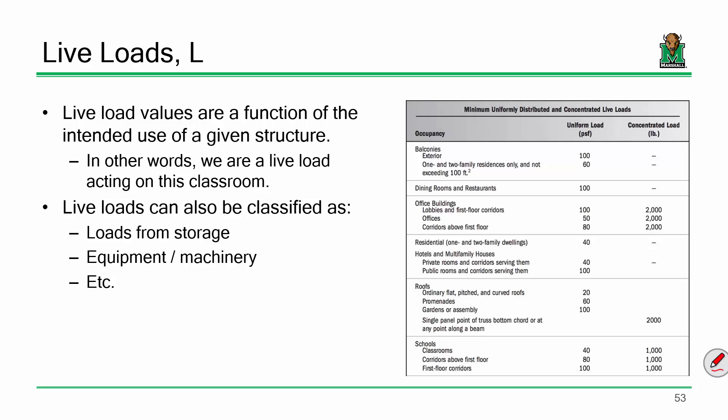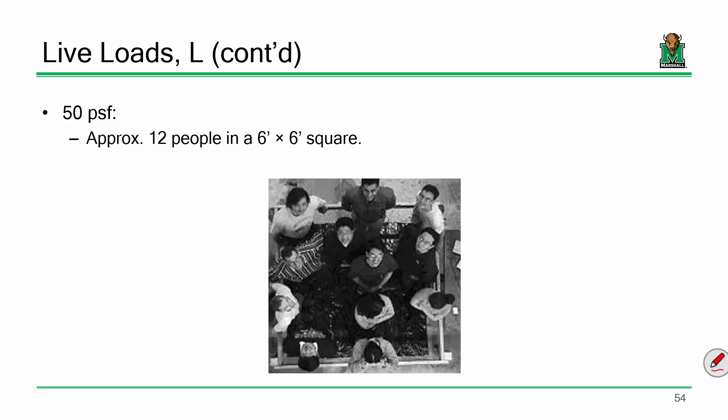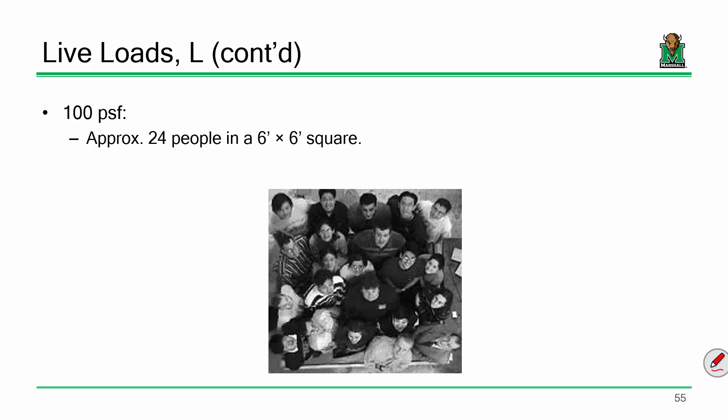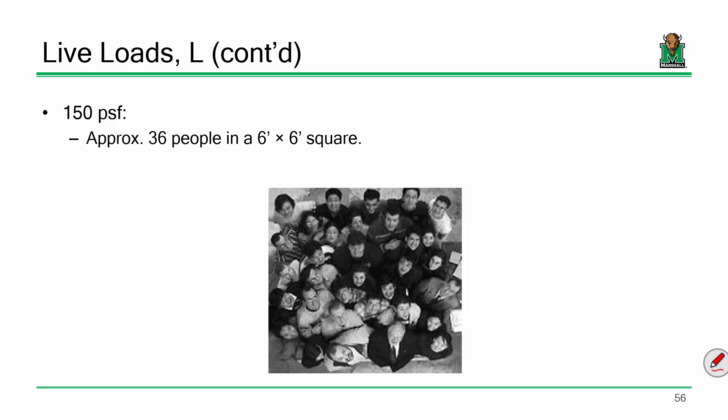When I was taking this course, I saw these occupancy loads — a classroom is 40 pounds per square foot — and I didn't understand what that meant visually. These images from the LRFD guide for pedestrian bridge design show what some pedestrian live loads look like. This is what 50 pounds per square foot looks like — a square about 6 foot by 6 foot with about 12 people in it. This is 100 pounds per square foot. And that's what 150 pounds per square foot looks like — that's a lot of people.